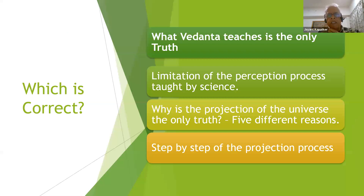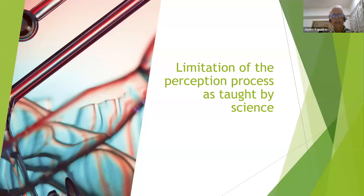What Vedanta teaches is the only truth. We will see that by looking at the limitations of the perception process as taught by science. We'll also give five different reasons based on logic and science for why projection of the universe is the only truth. We'll lastly cover the step-by-step process of how exactly the projection works. So let's see what are the limitations of the perception process as taught by science.